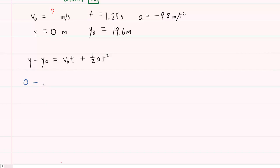0 meters minus the initial position of 19.6 meters equals the unknown initial velocity multiplied by the time interval plus one half times the acceleration times the time interval squared. Don't forget to square that time interval.